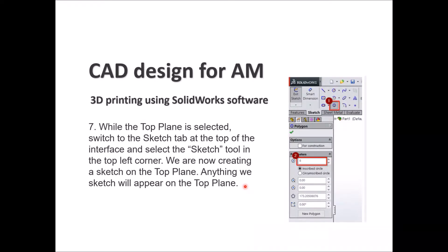While the top plane is selected, switch to the Sketch tab at the top of the interface and select the Sketch tool. You can find the Sketch tab and click on it to see all the sketch tools — the Line tool, Circle tool, Curves tool, Oval designs, Text, and all kinds of sketching tools available in SOLIDWORKS. Now you are creating a sketch on the top plane, and anything you sketch will appear on the top plane.